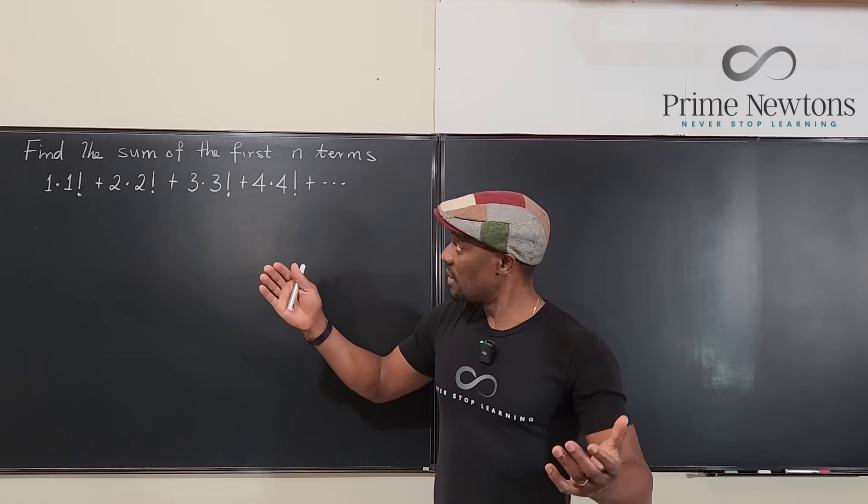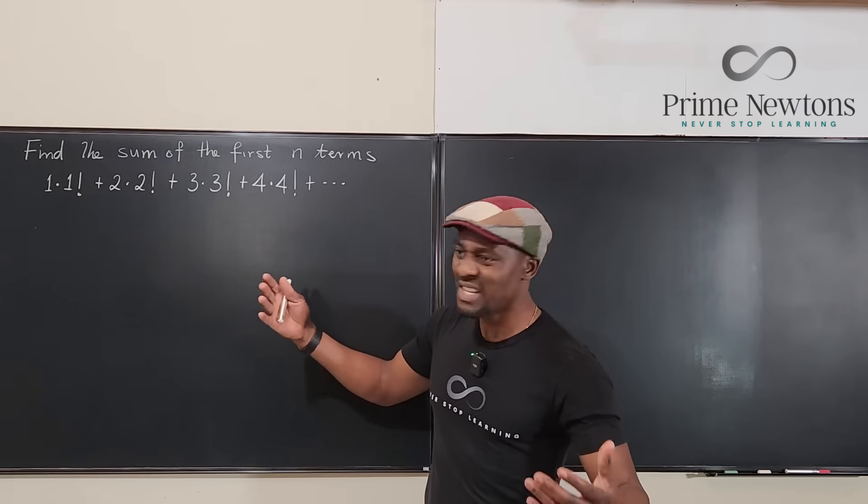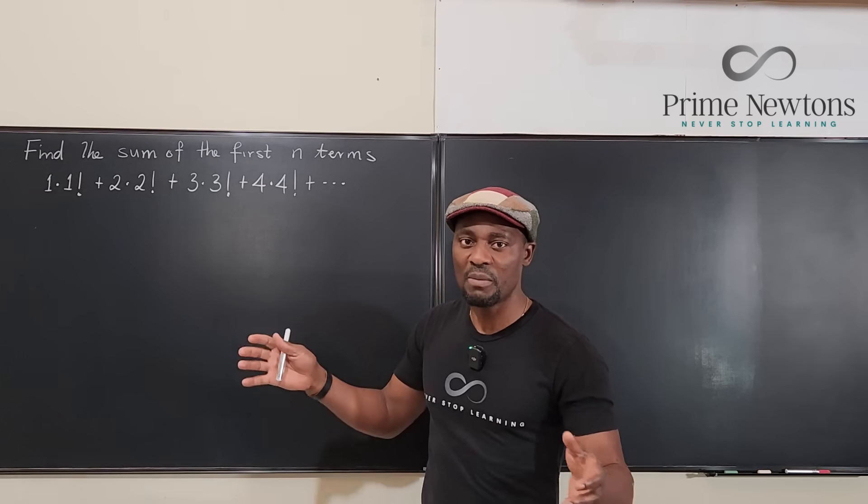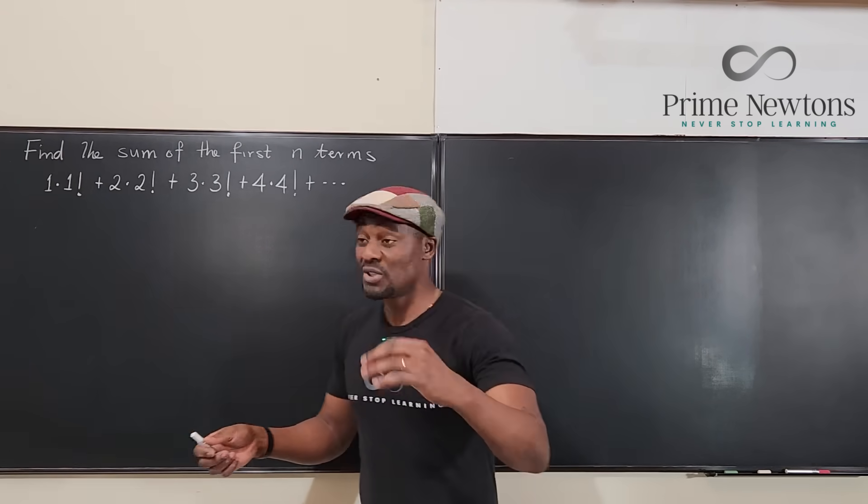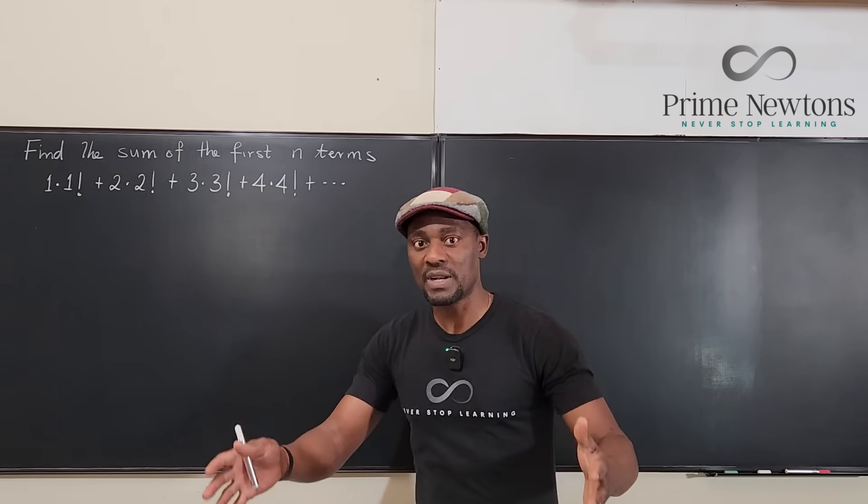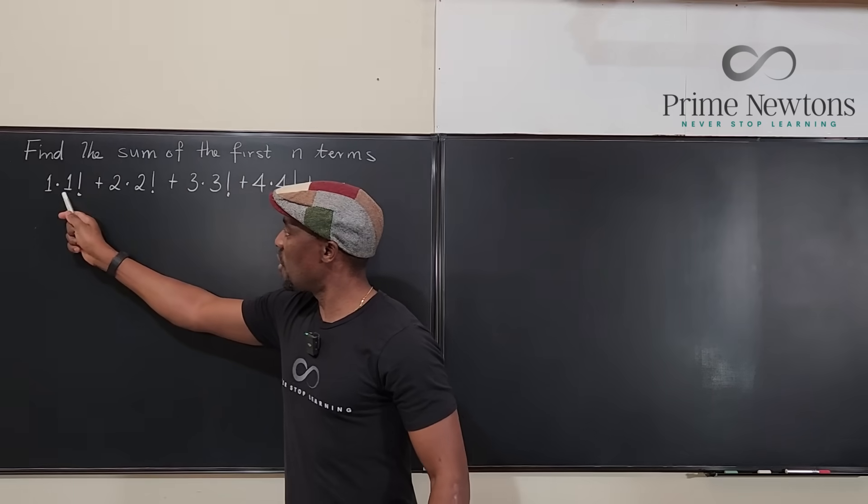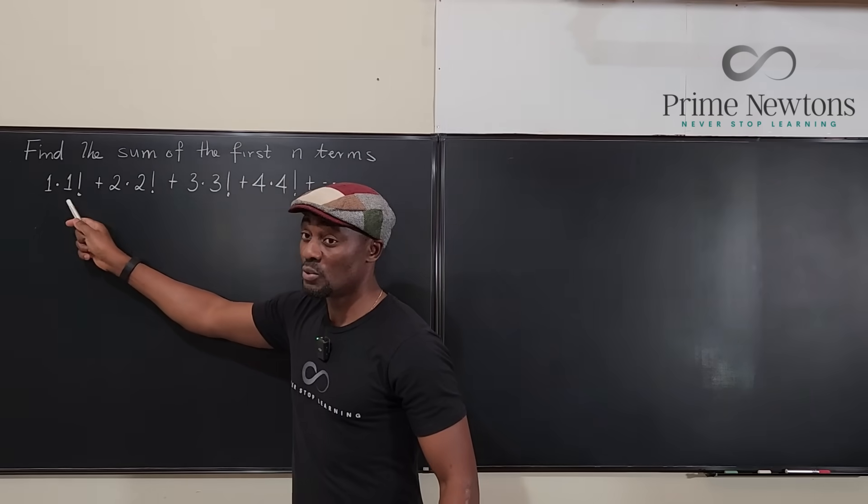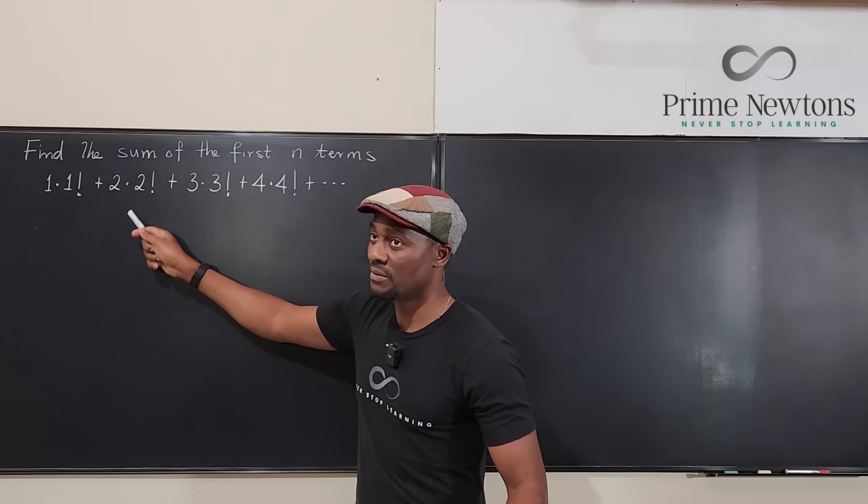The question is to find the sum of the first n terms of this series. So for example, if we want to just consider the first three terms, we can separately compute each of them. So you have 1 times 1 factorial is 1 times 1, that's 1. 2 times 2 factorial is 2 times 2, that's 4.